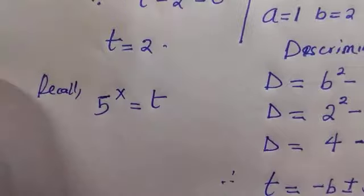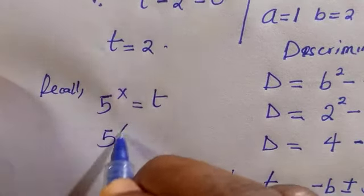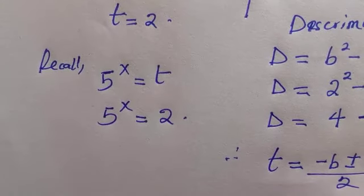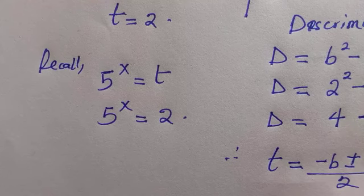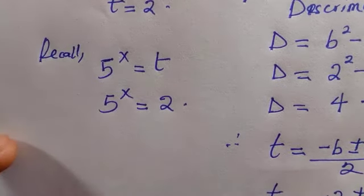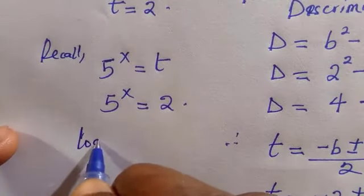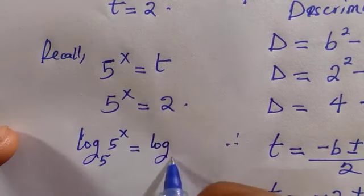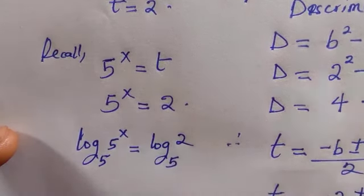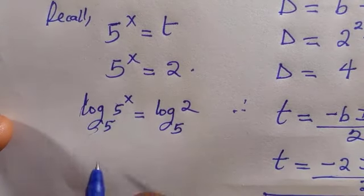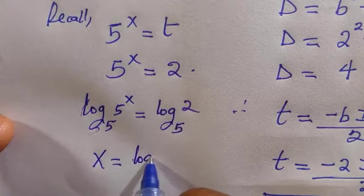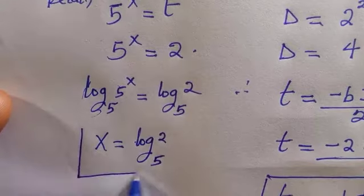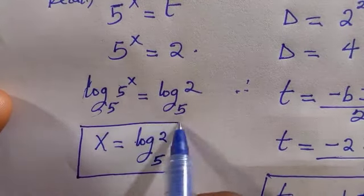Replacing t here with 2, we are going to have 5 raised to power x equals 2. Then to get the value of x it's very simple. What to do is we introduce logarithm of base 5 to both sides. So we have logarithm of base 5 then 5 to the power x equals logarithm of base 5 then 2. If 5 cancel 5 as a log of the same base equals 1, we have x which is log 2 base 5. Here gives the result for the value of x.